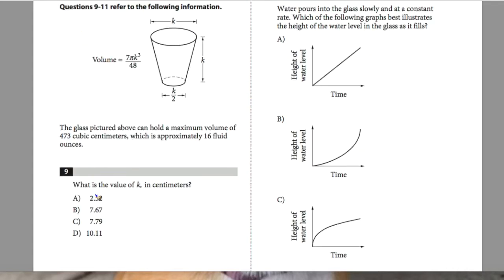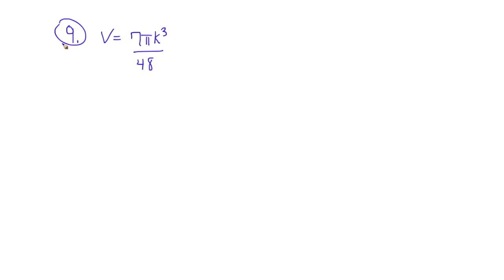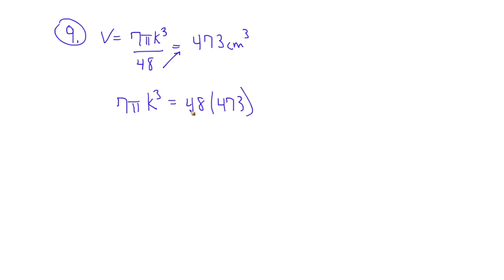Question 9: what is the value of k in centimeters? Questions 9 through 11 reference a diagram where volume equals 7πk³ over 48. The total volume the container holds is 473 cubic centimeters. Plugging in: 473 equals 7πk³ over 48. Cross multiplying gives 48 times 473, which equals 22,704, equaling 7πk³.